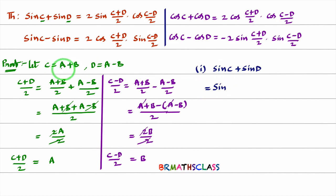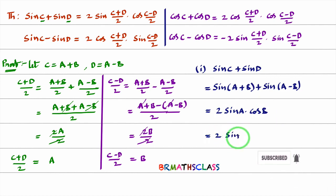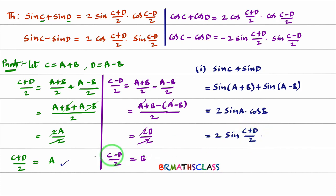Since C was considered as A+B and D as A−B, we write sin(A+B) + sin(A−B). The formula for sin(A+B) + sin(A−B), which we already learned, is 2 sin A cos B. Now substituting back: A is (C+D)/2 and B is (C−D)/2. So we get sin C + sin D = 2 sin((C+D)/2) · cos((C−D)/2). Hence the first result is proved.